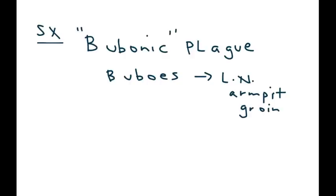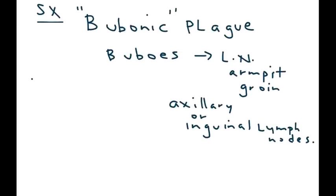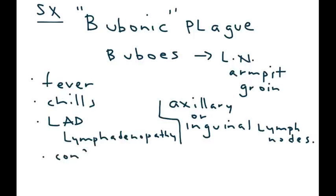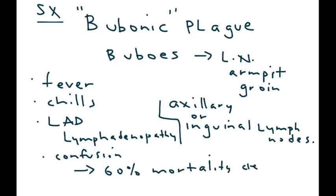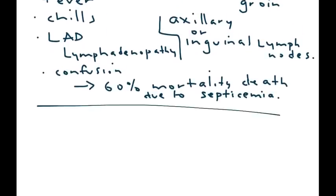Buboes are essentially swollen lymph nodes in either the armpit or the groin — medically the axillary or inguinal lymph nodes. Symptoms of bubonic plague include fever, chills, and impressive lymphadenopathy. The patient can also progress to confusion, and sixty percent of the time the patient can die, most commonly due to septicemia.